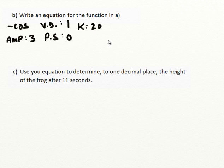That would mean that the equation, or the height of the frog at a particular time t, would be equal to negative amplitude, it was a cosine function, k value, no phase shift, but there is a vertical displacement. So h(t) = -3cos(20t) + 1.